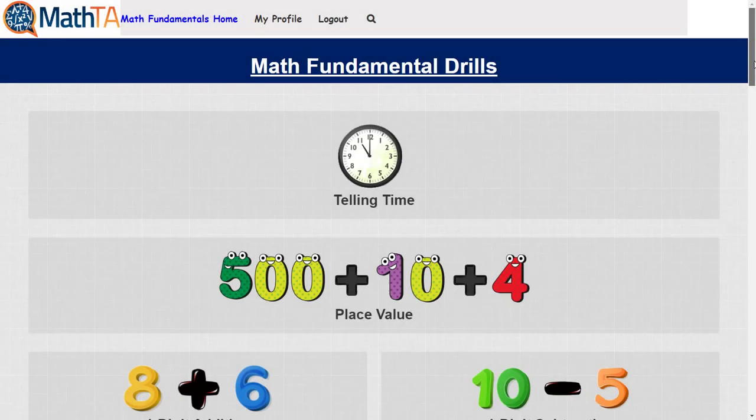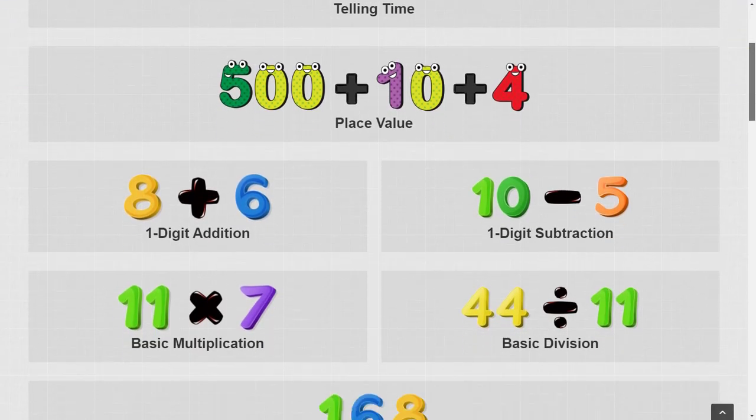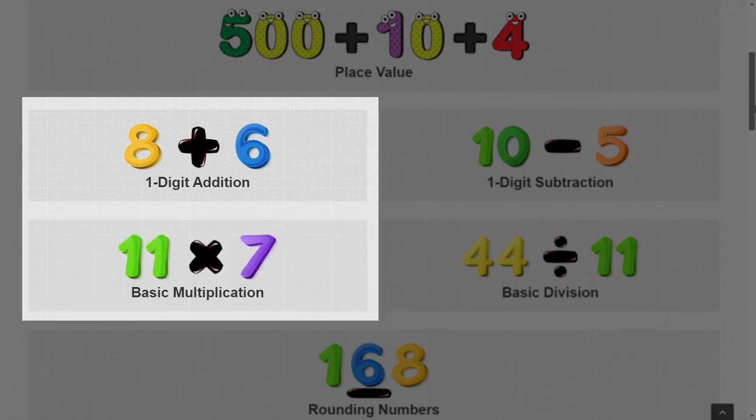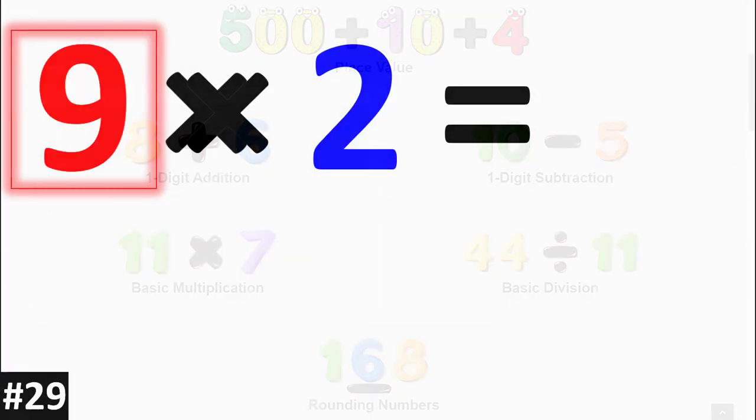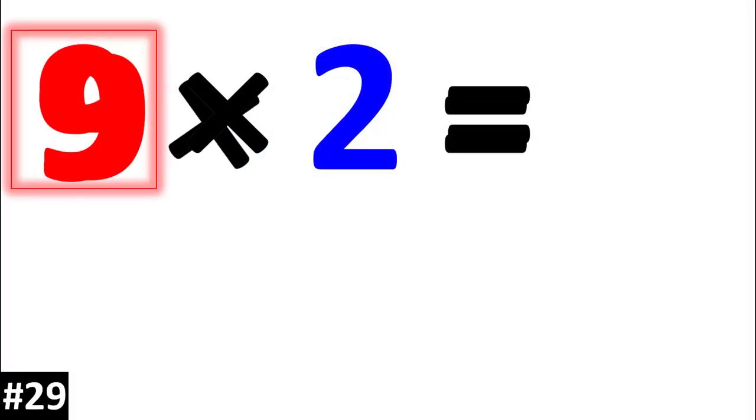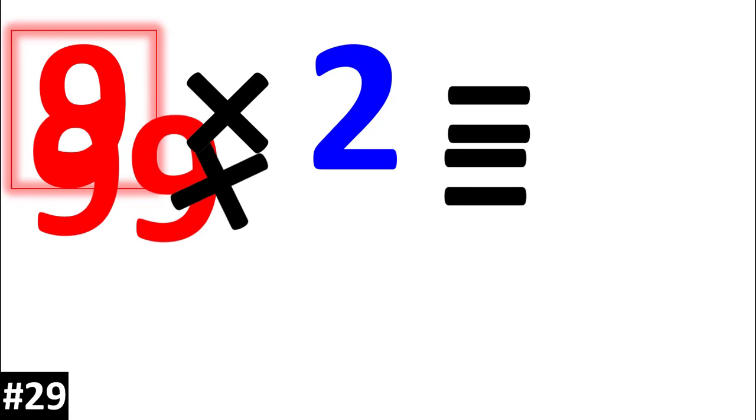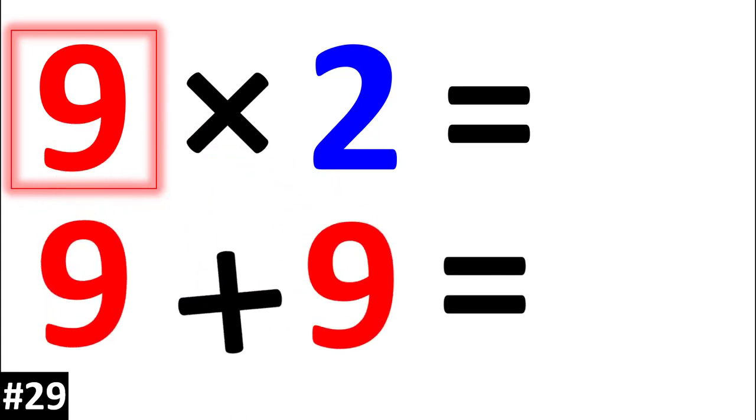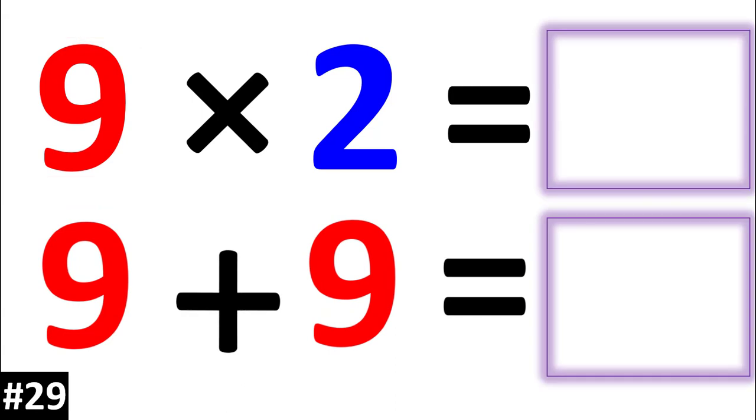After place value, the most important areas for students to focus on are one digit addition and basic multiplication. These addition and multiplication facts are the foundation for almost every math skill. That's why we've designed the fastest and easiest way for students to learn these math facts.